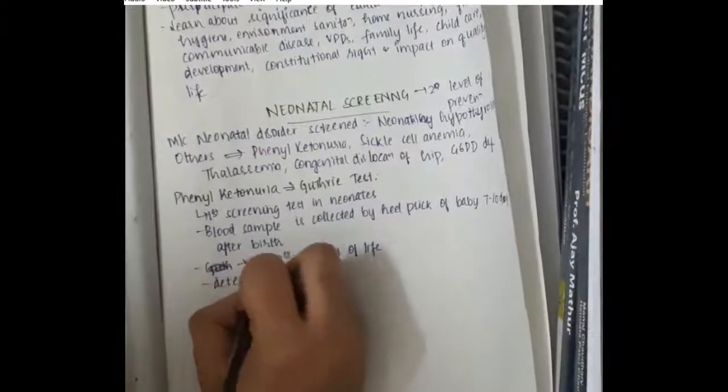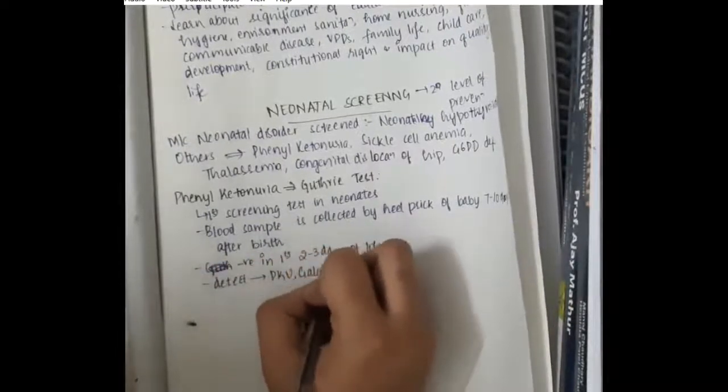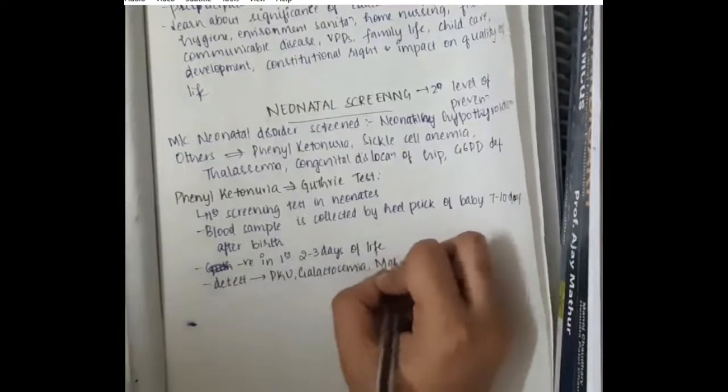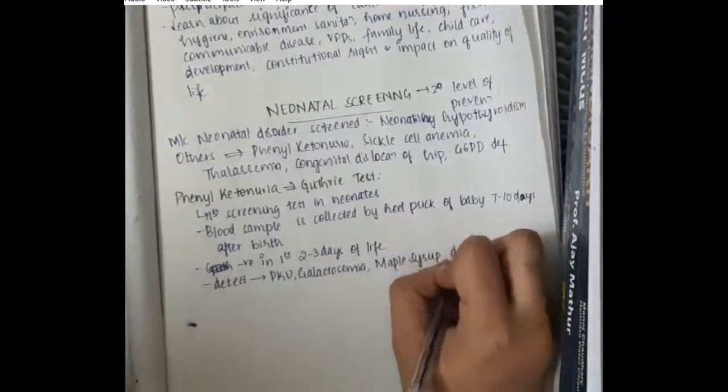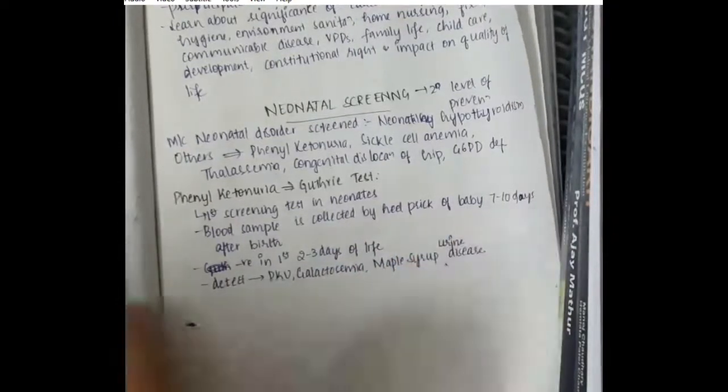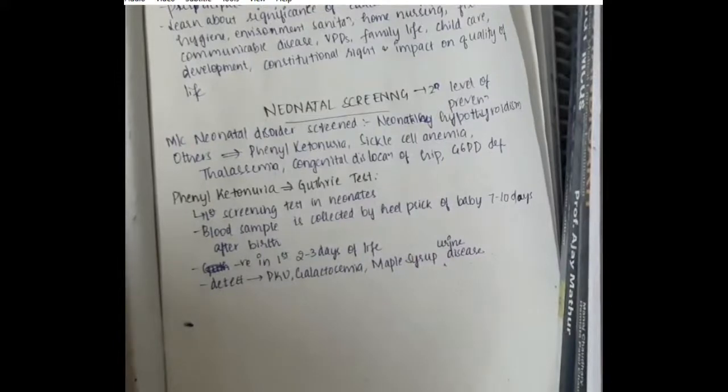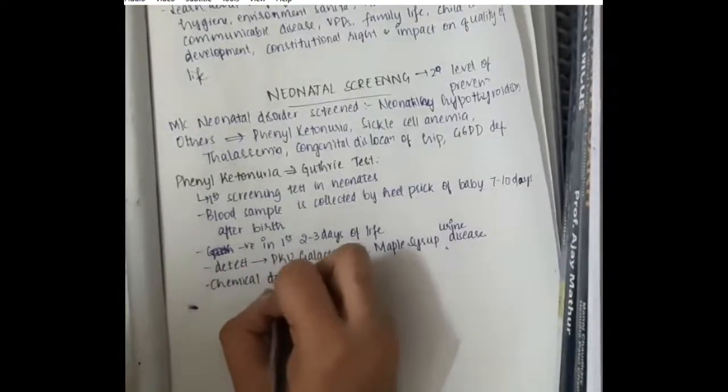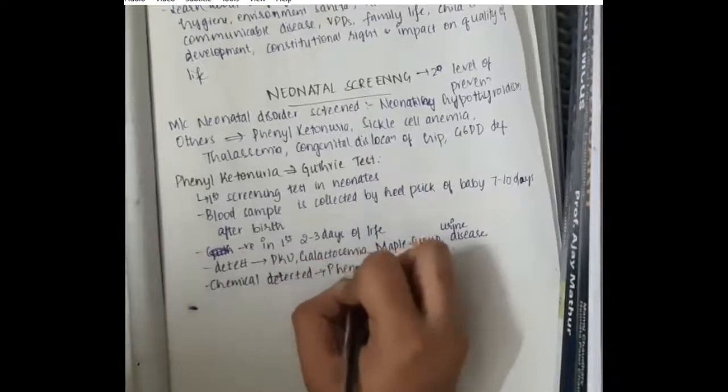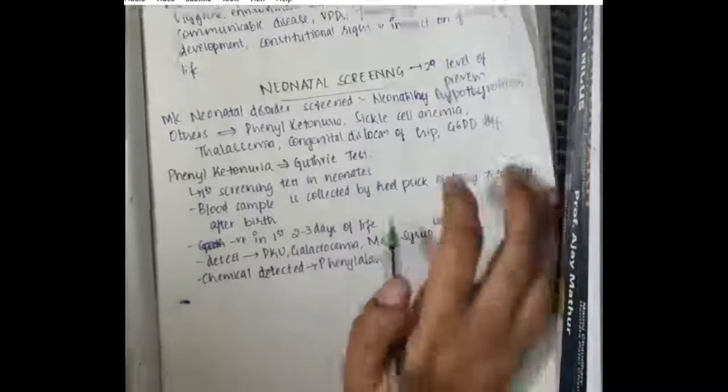So we should not take the samples in first 2-3 days. This Guthrie test helps to detect phenylketonuria along with that other diseases like galactosemia and maple syrup urine disease are also diagnosed with Guthrie test.